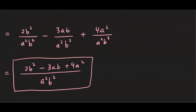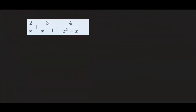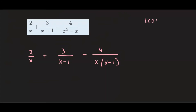Let's take a look at another example. We have a problem involving three terms that we want to combine into a single fraction. We'll look for the LCD, but first let's see if we can factor the denominators. So 2 over x — nothing to factor. Plus 3 over x minus 1 — nothing to factor. Minus 4 over x squared minus x — here I can pull out an x, leaving x times x minus 1. Now all denominators are fully factored. The LCD combines all factors: x times x minus 1, which already contains everything from all three fractions.